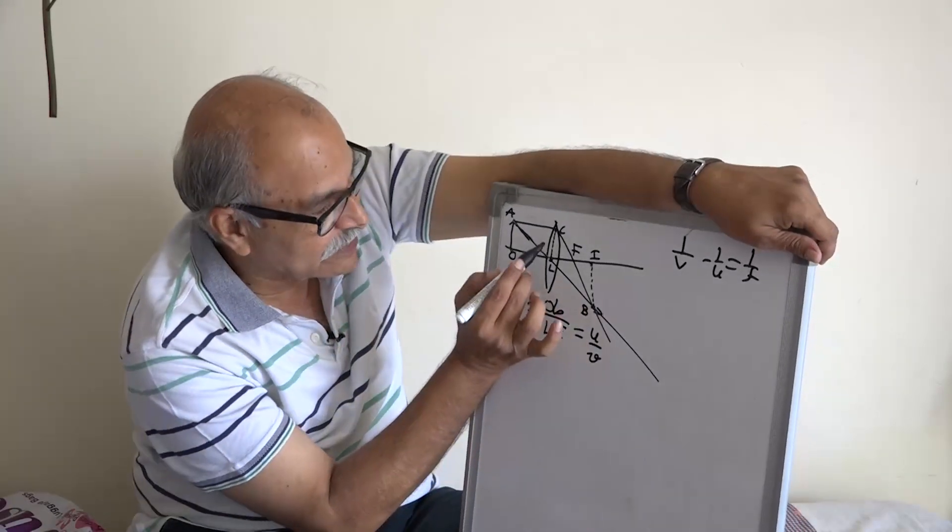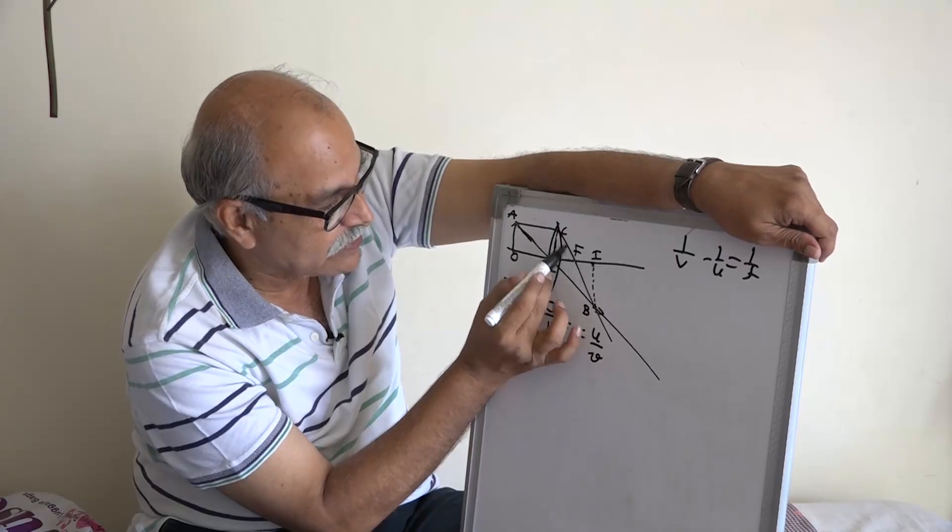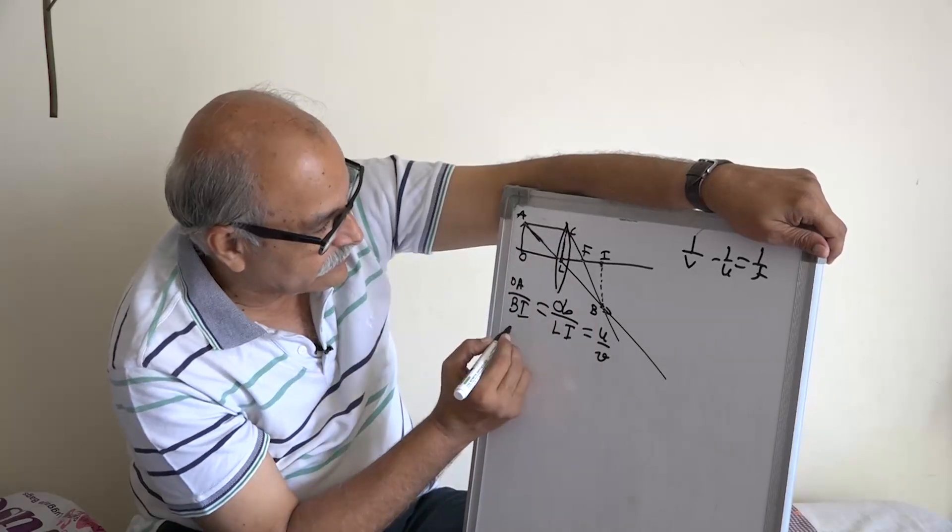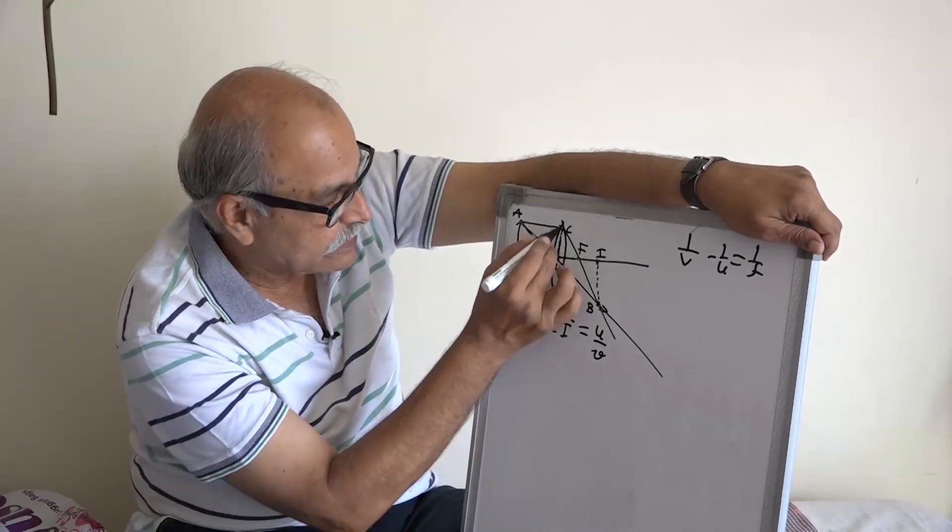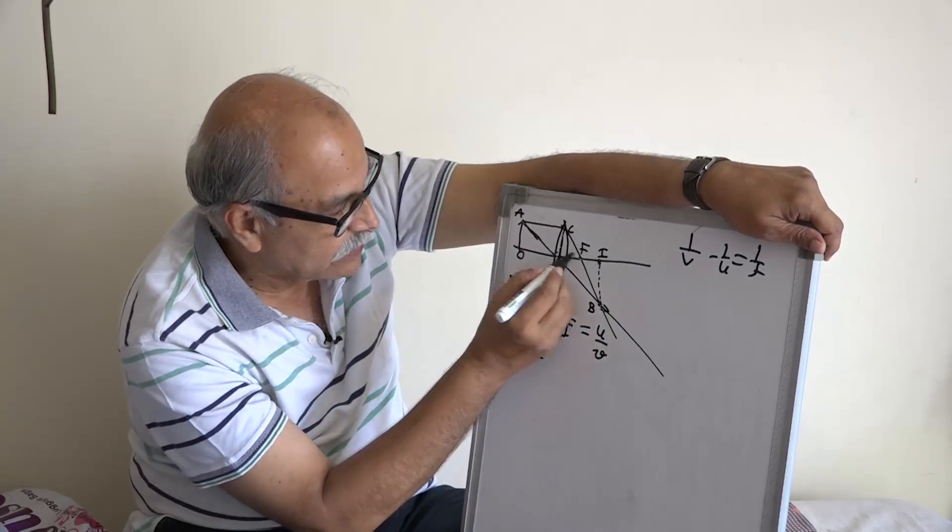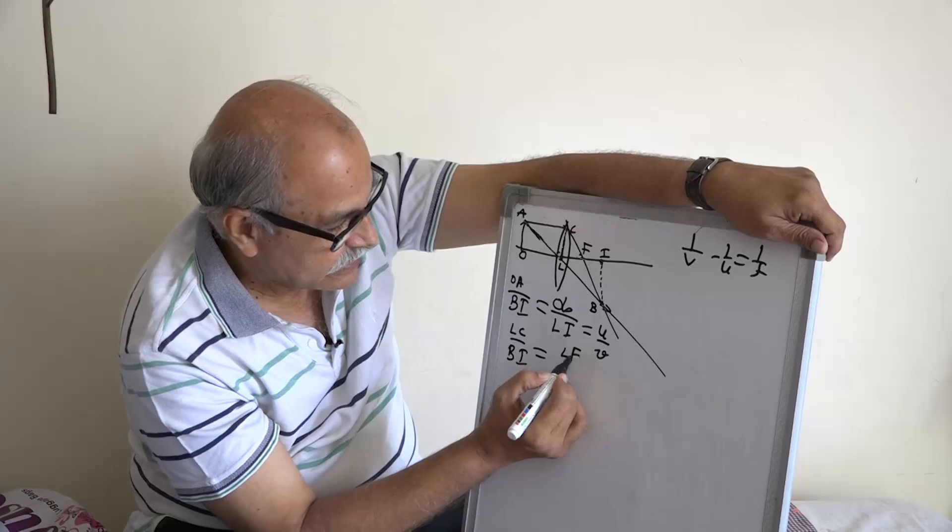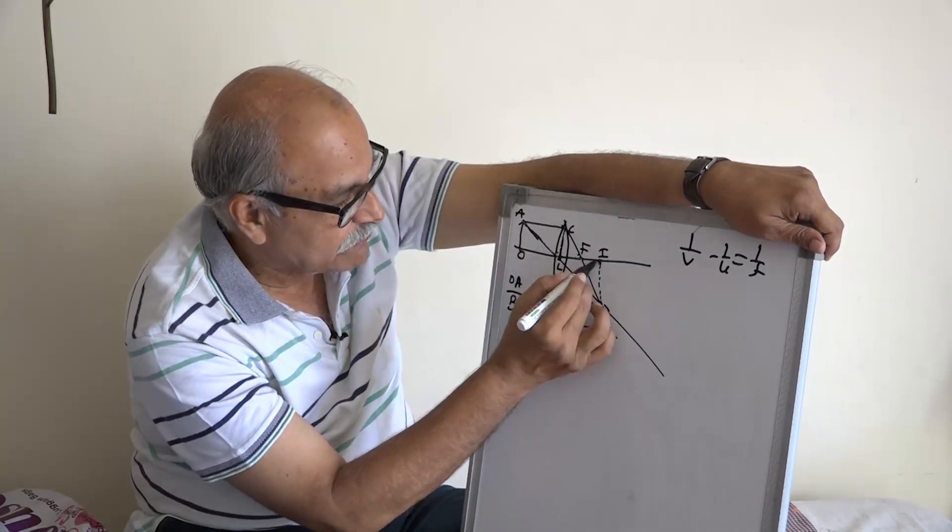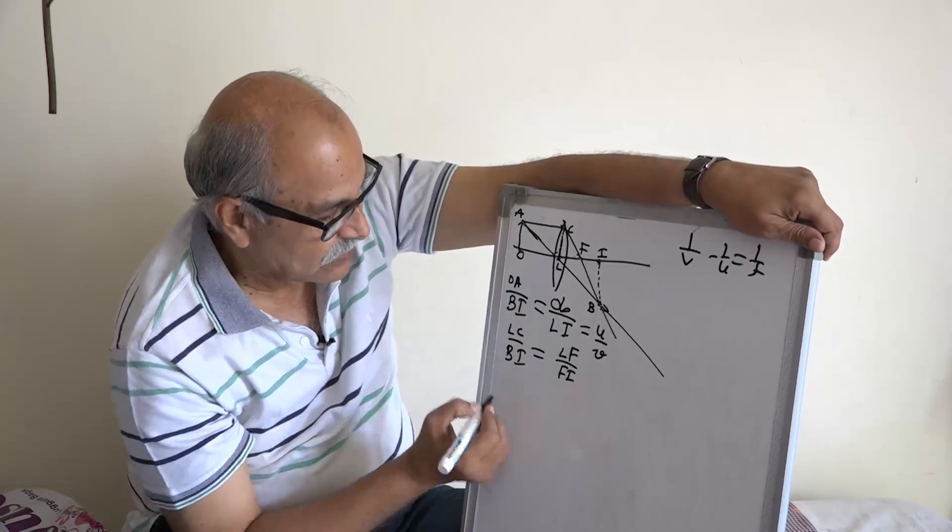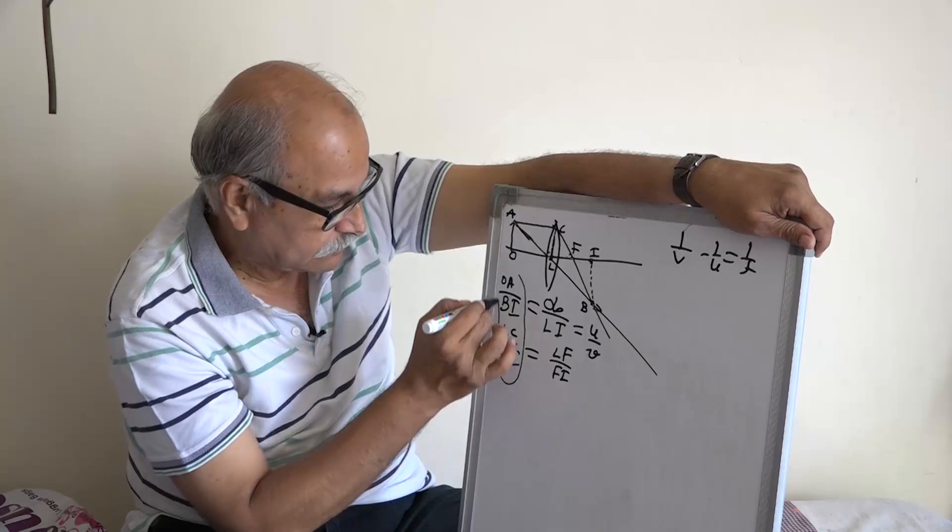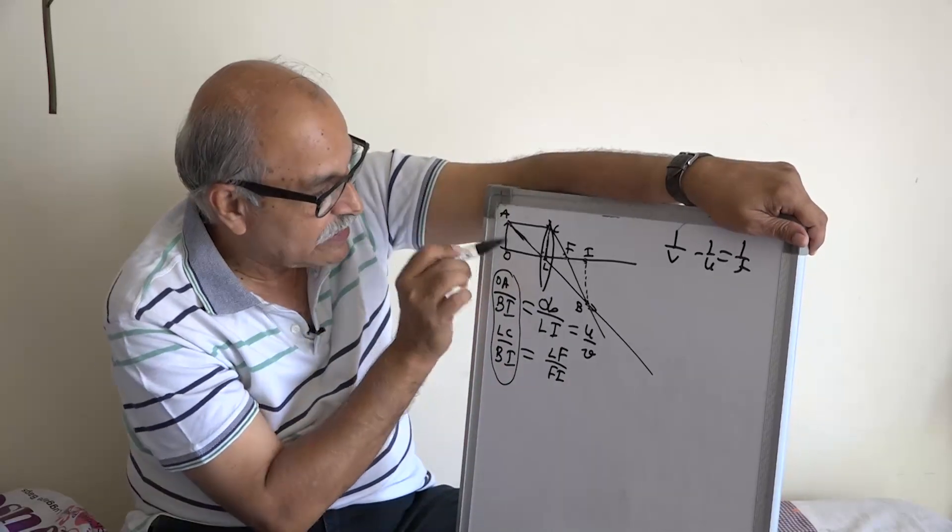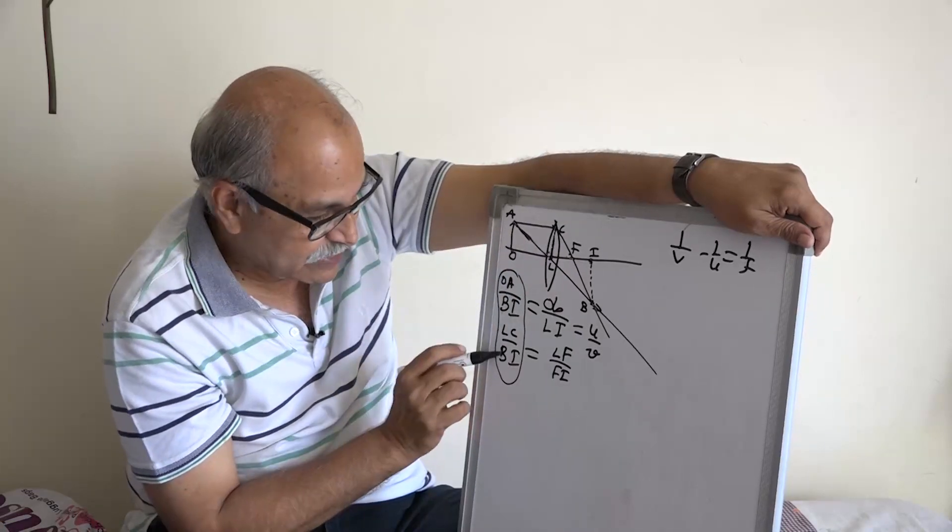Then you take another angle, this triangle here and opposite this triangle here, they are also similar. So you write LC divided by B,I and that is equal to L,F divided by correspondingly F,I. These two are equal because O,A is same as LC and B,I is same here.